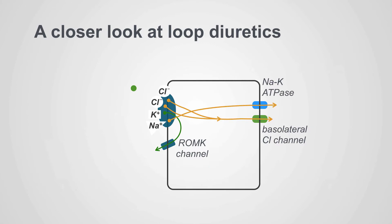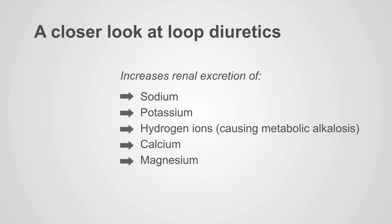Let's look at how loop diuretics actually work at the thick ascending limb of the loop of Henle. Lasix is represented as a green dot — it blocks the chloride slot, fitting into it and shutting down the sodium-potassium-2-chloride transporter. This increases renal excretion of sodium, potassium, hydrogen ions causing metabolic alkalosis, calcium, and magnesium.